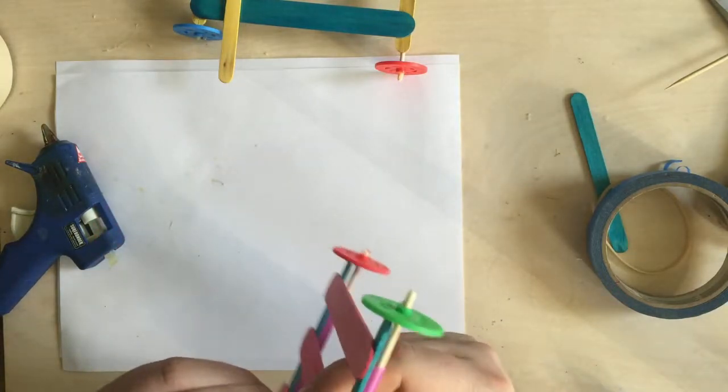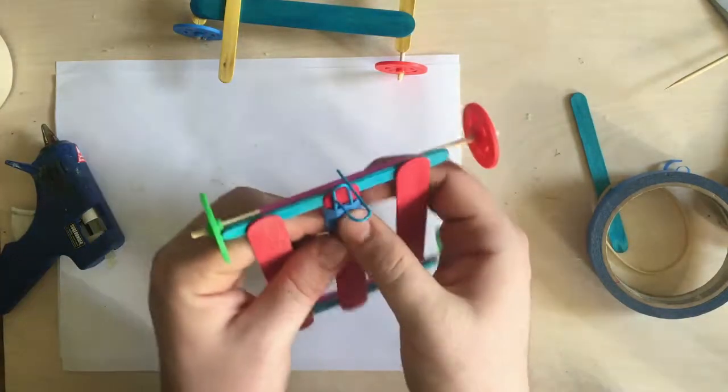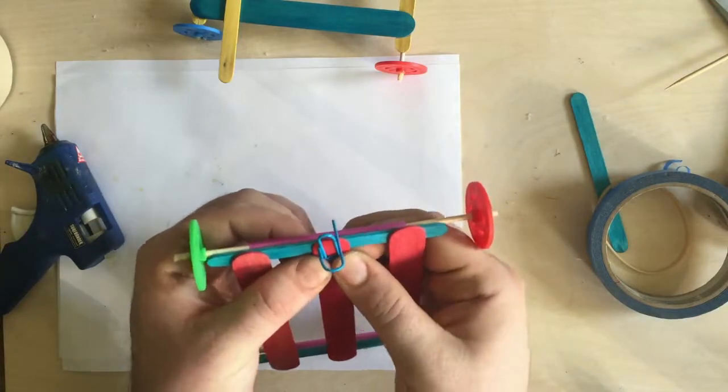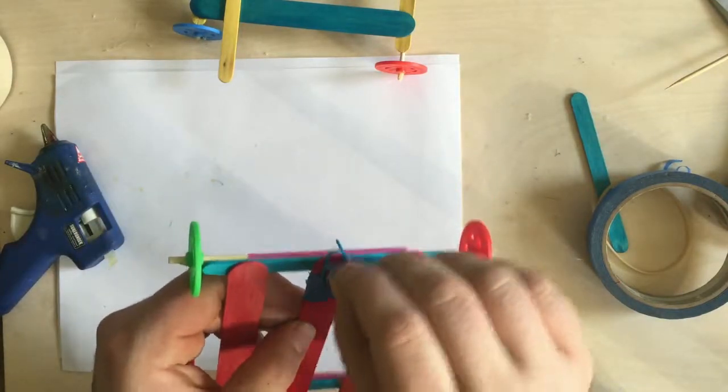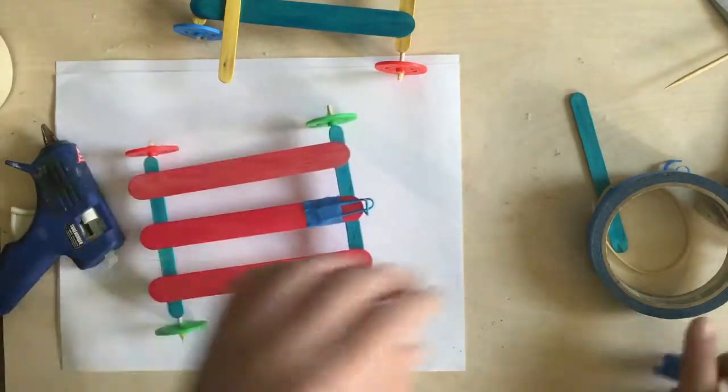And there we go. So now that should be pretty secure. Squeeze that down a little bit just to make sure the tape is hitting the popsicle stick. And now if I tug on this a little bit, that's pretty firmly in place.